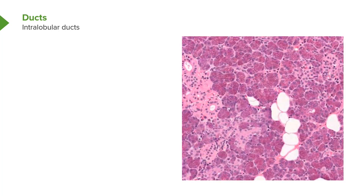This section is taken through a serous secreting gland. What dominates are the white circular spaces, which happen to be fat cells or adipocytes — similar to mucus-secreting cells, the content of these cells is lost during processing. On the left-hand side of the picture, you can make out intralobular ducts. They have a circular-shaped lumen, and if cut transversely, they show a nice cuboidal epithelium.